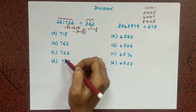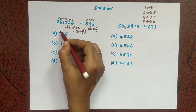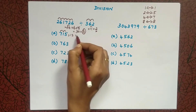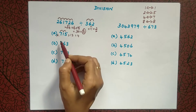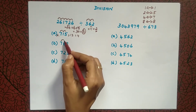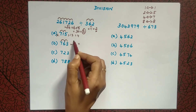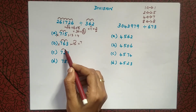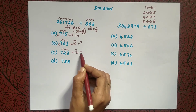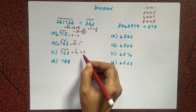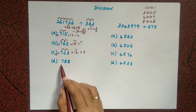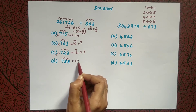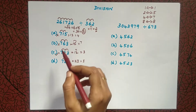Now we check which answer option gives us 3. For the first option: 7 plus 1 is 8, 8 plus 5 is 13, which gives 4 — not the answer. Next: 7 plus 6 is 13, 13 plus 3 is 16, which gives 7 — also not right. Next: 7 plus 2 is 9, 9 plus 3 is 12, and 1 plus 2 gives 3. Here also 3, so this is the right answer. To confirm, the last option: 7 plus 8 is 15, 15 plus 8 is 23, which is 5 — not matching.